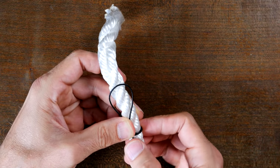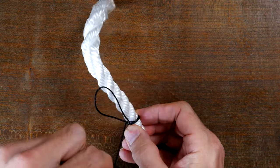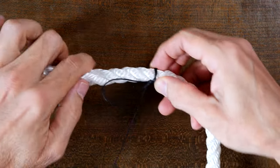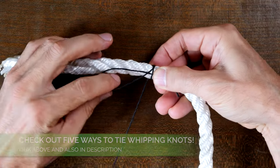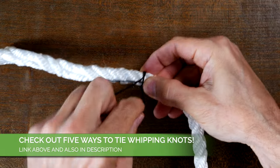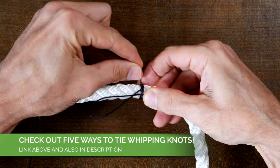There are other ways to add end whipping to protect the end of a rope from fraying. And if you'd like to see some others, then I'd recommend my video five types of whipping knots, link in the description and also at the end of this video.